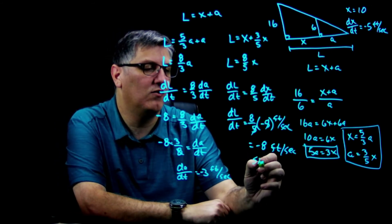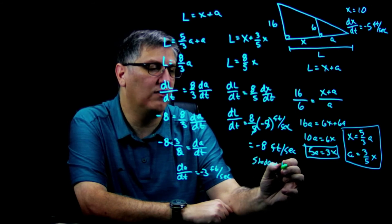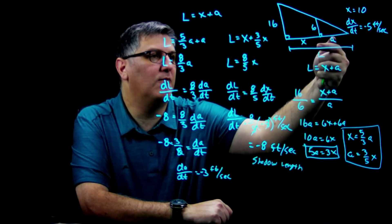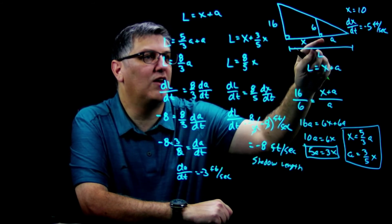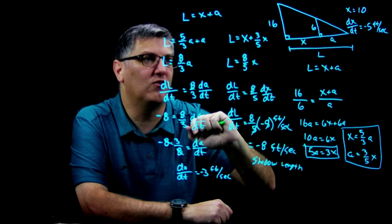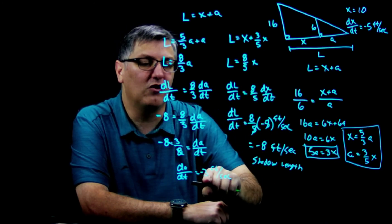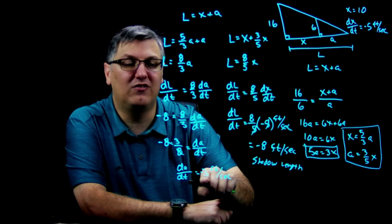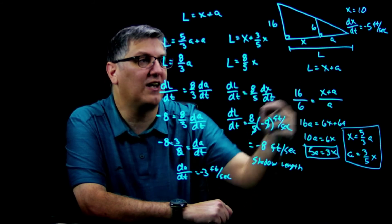So what this tells me, this right here tells me my shadow length. My shadow length is decreasing at eight feet per second when this person is 10 feet from the lamppost when the lamppost is 16 feet tall. It also tells me that the tip of the shadow is moving at three, it's decreasing by three feet per second.